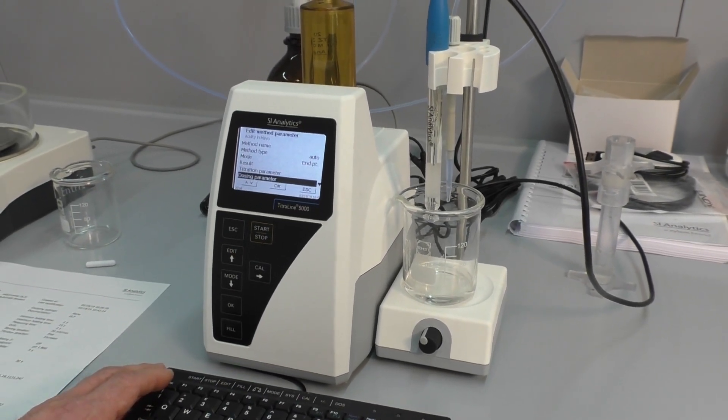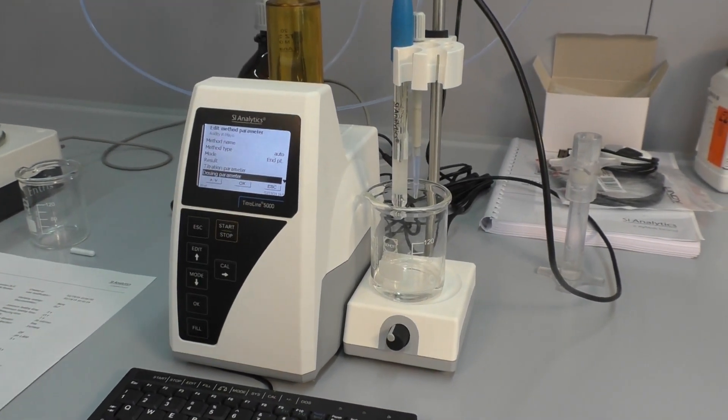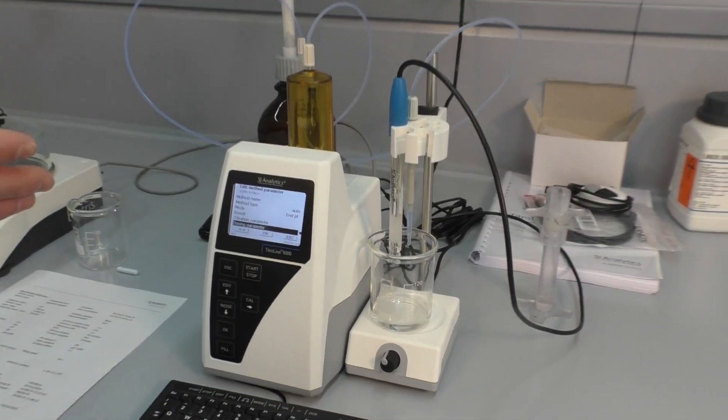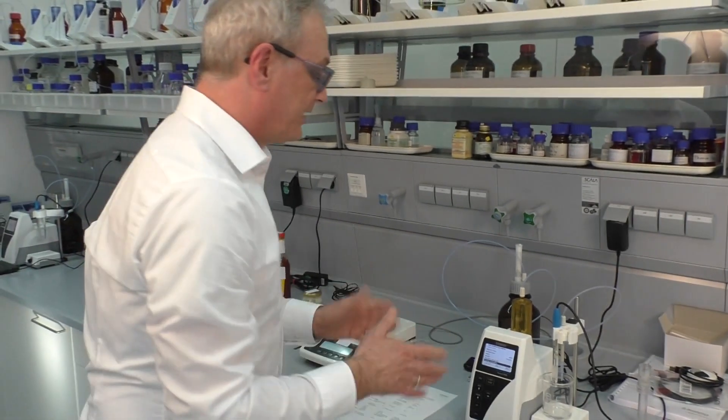Next is we have to change the dosing speed and the titration parameters a little bit. Because if you use the standard parameters from the total acidity in juice, the titration will be too fast and over-titrate.